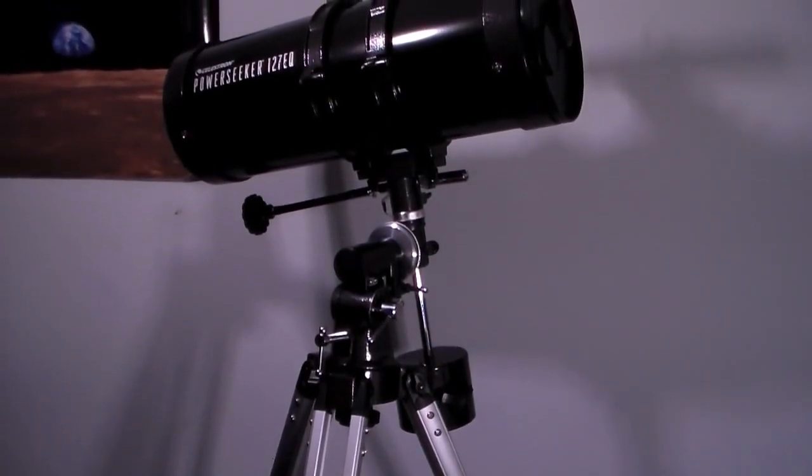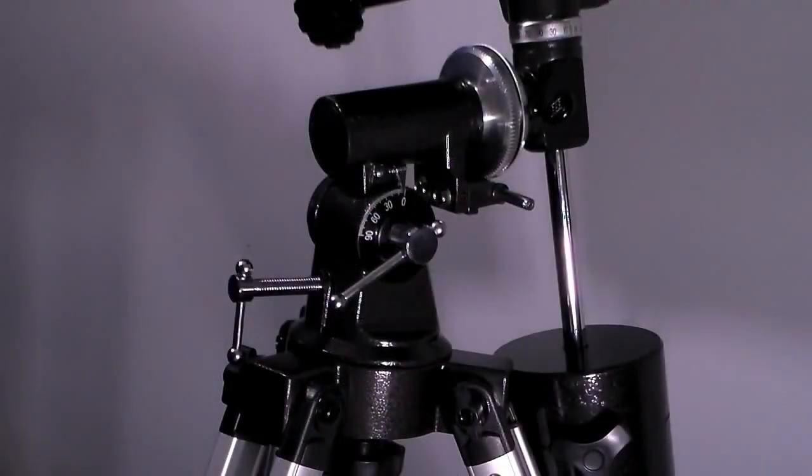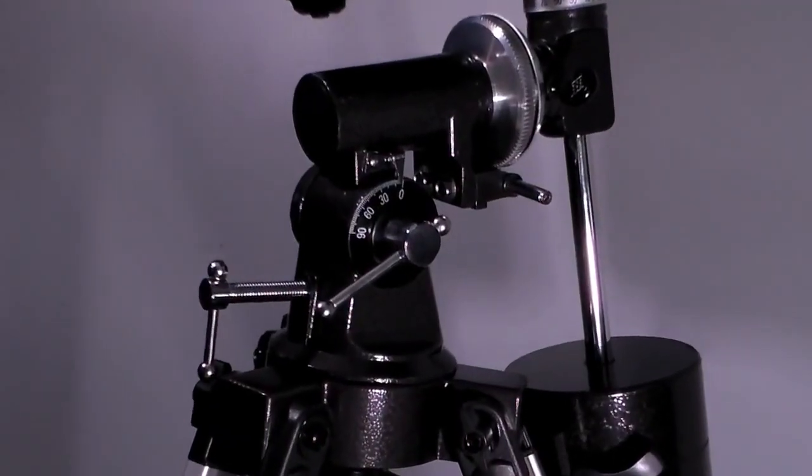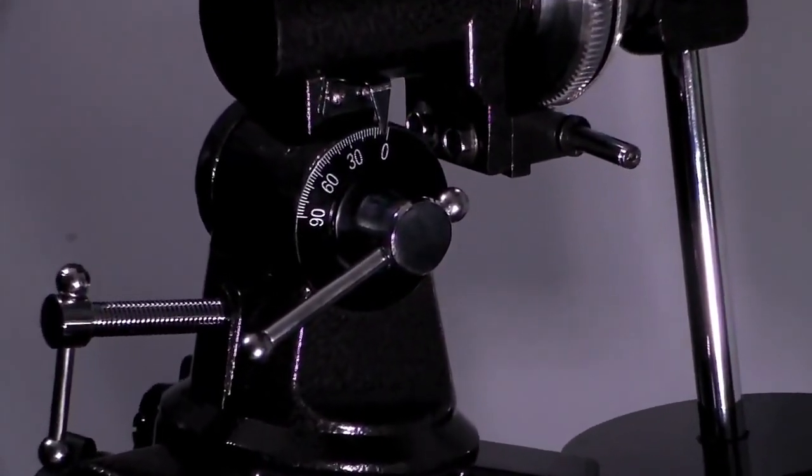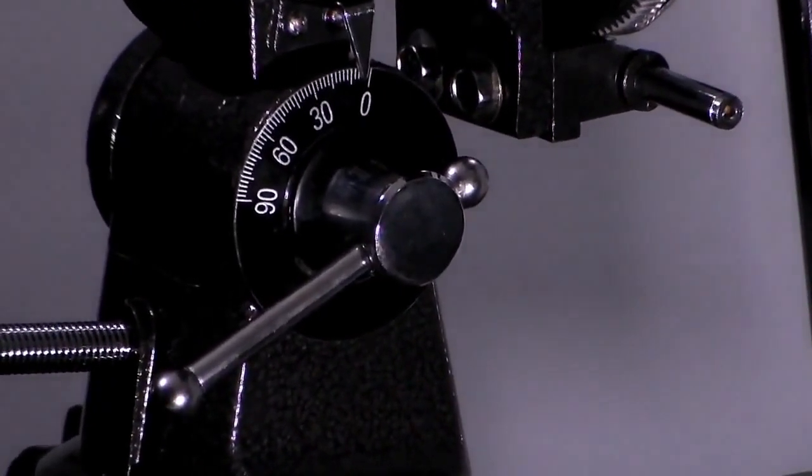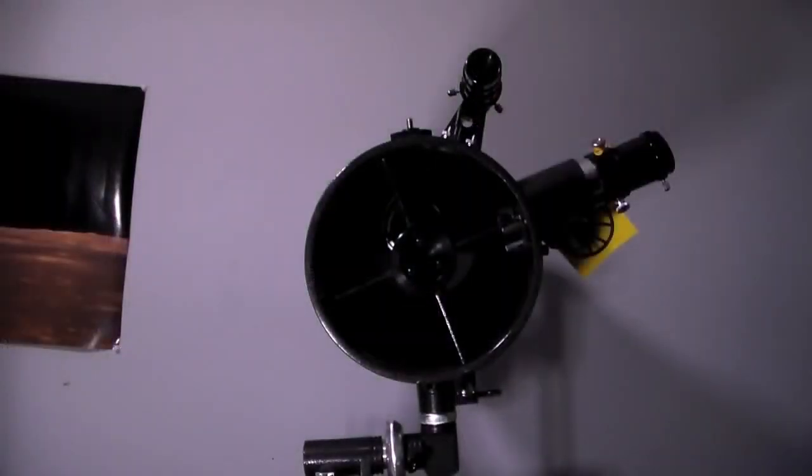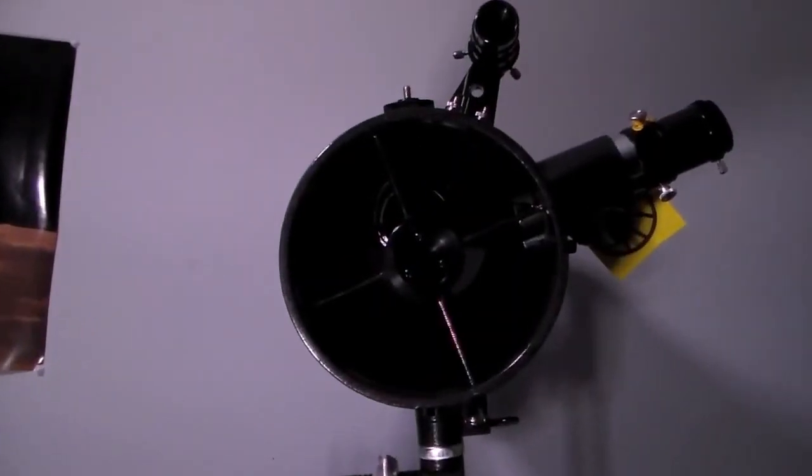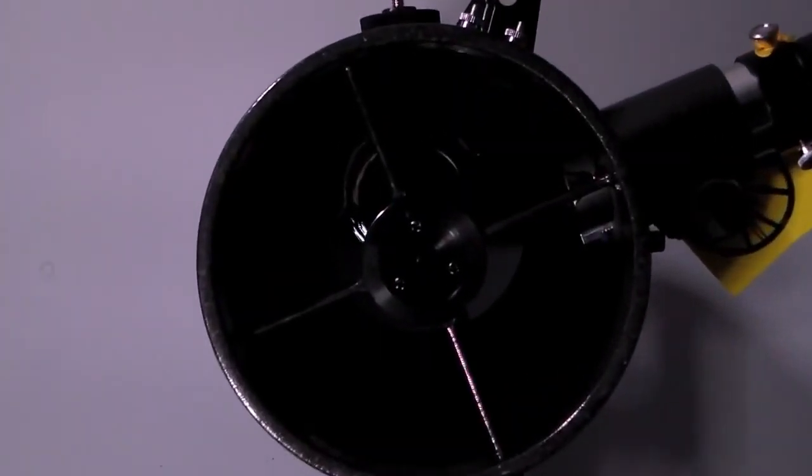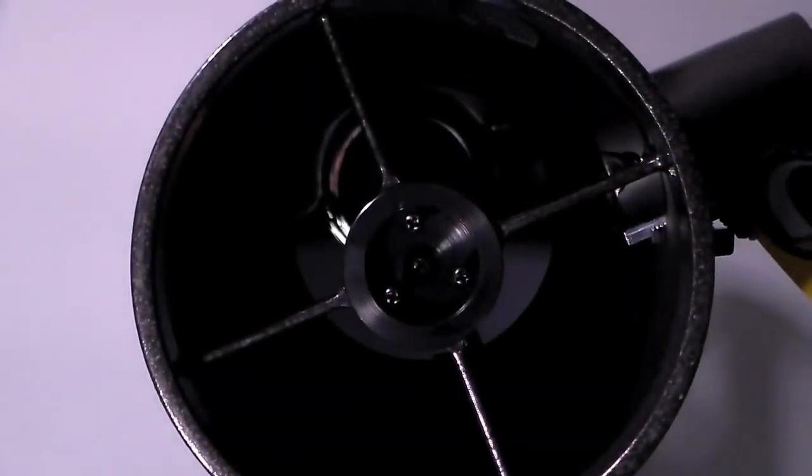The Celestron PowerSeeker 127EQ has slow motion controls for smooth tracking. You do not have to bend over a lot with this telescope and it has erect image optics which is ideal for astronomical use. This telescope has fully coated glass optical components with high transmission coatings for enhanced image brightness and clarity.